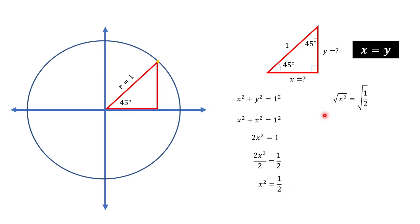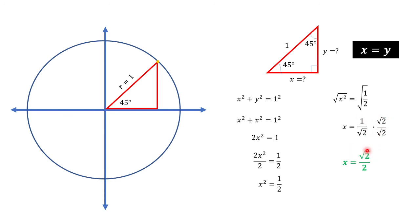To get x alone, we take the square root of both sides. Simplifying, we have √(1/2), which is 1 over √2. We need to rationalize this by multiplying by √2/√2. Therefore, x = √2/2, because 1 × √2 = √2, and √2 × √2 = 2. Since x = y, the coordinates of this point are (√2/2, √2/2).